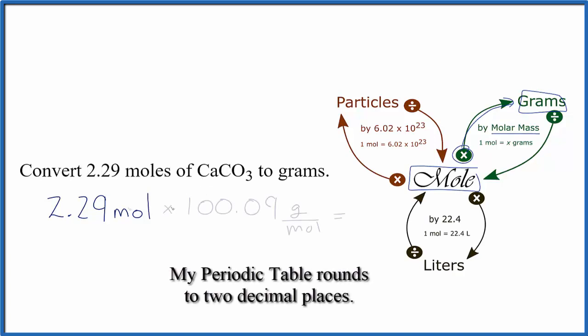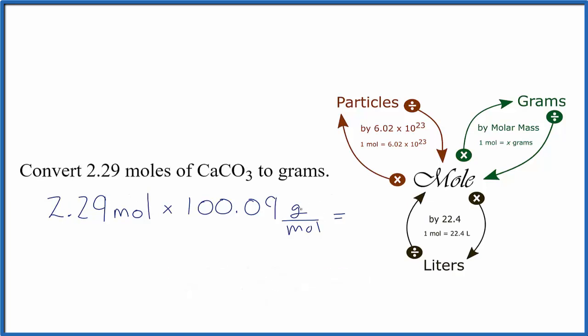When we do that, we have our moles and we're multiplying that by the molar mass for calcium carbonate. When we multiply that, the moles on top and on bottom cancel out. That gives us grams, which is what we're looking for. We end up with 229.21 grams of calcium carbonate.